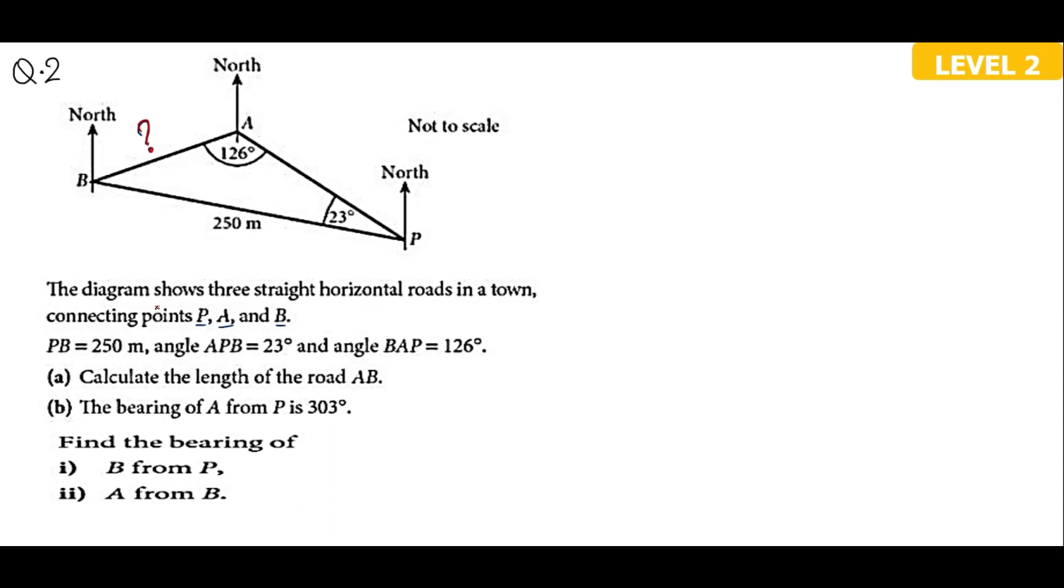Now the second thing is for the sine rule. I would like to have AB. Let me just mark it as X. And do I have the opposite angle here? I can see the side and opposite angle. And here, again, I have an angle and the opposite side. So if you want to use the sine rule, you have the three parts known and you have an unknown.